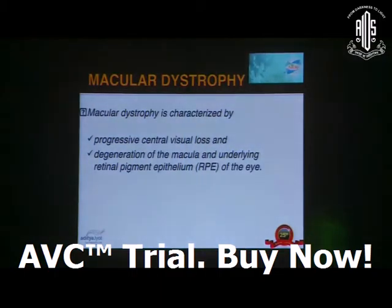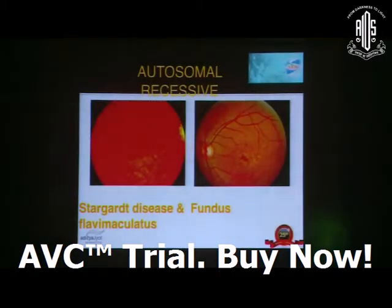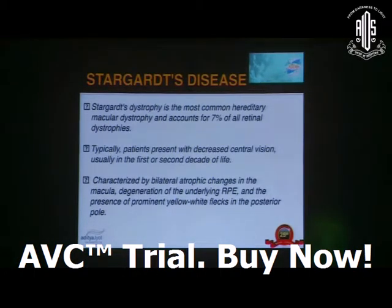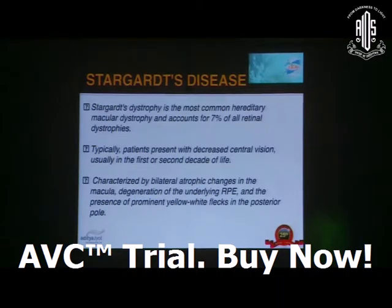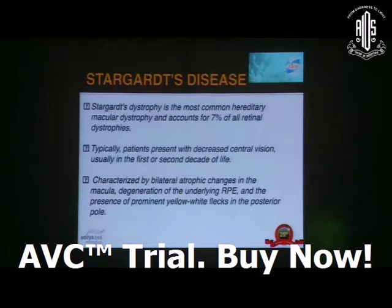Macular dystrophy is characterized by progressive central visual loss and degeneration of the macula and underlying retinal pigment epithelium of the eye. You have Stargardt's disease and fundus flavimaculatus. Stargardt's dystrophy is the most common hereditary macular dystrophy and accounts for 7% of all retinal dystrophies. Patients typically present with decreased central vision usually in the first or second decade of life, characterized by bilateral atrophic changes in the macula, degeneration of the underlying retinal pigment epithelium, and the presence of prominent yellow-white flecks in the posterior pole.